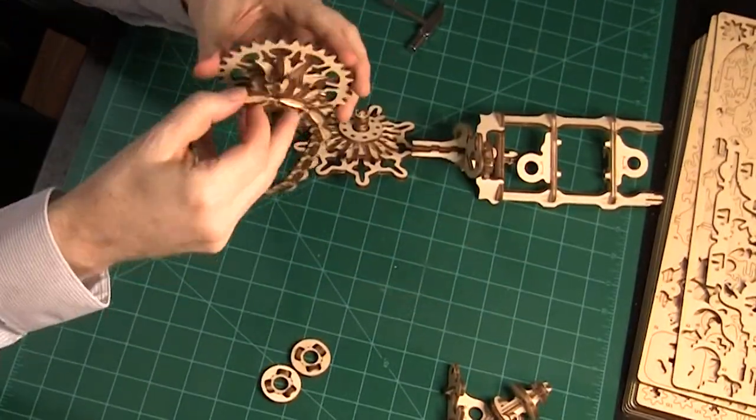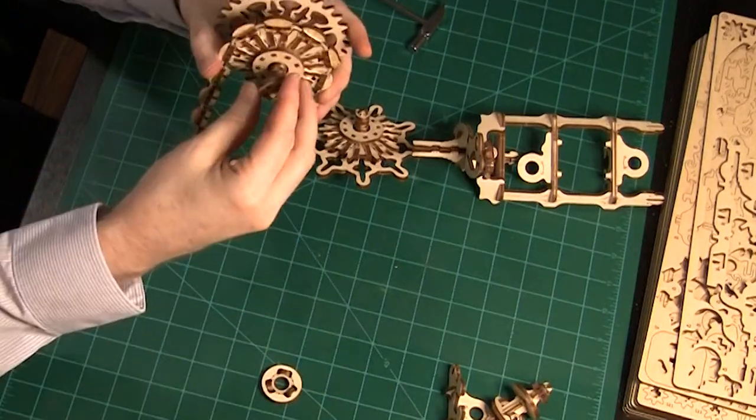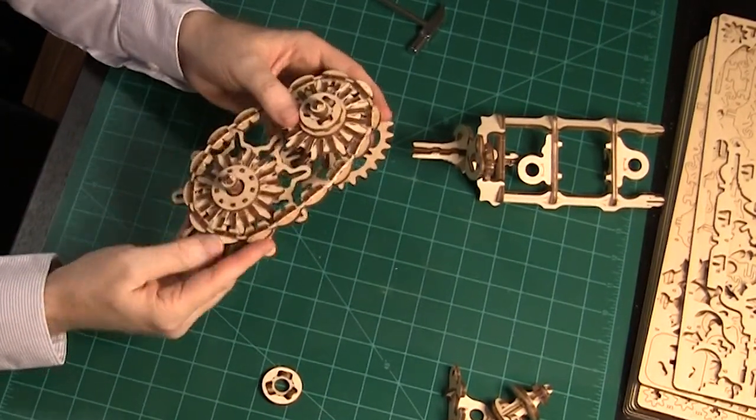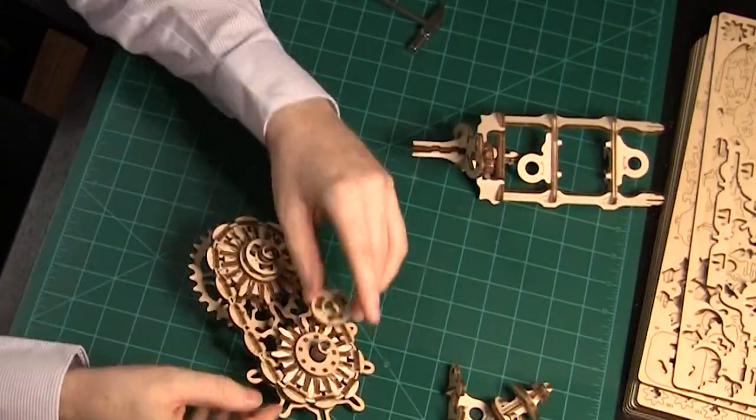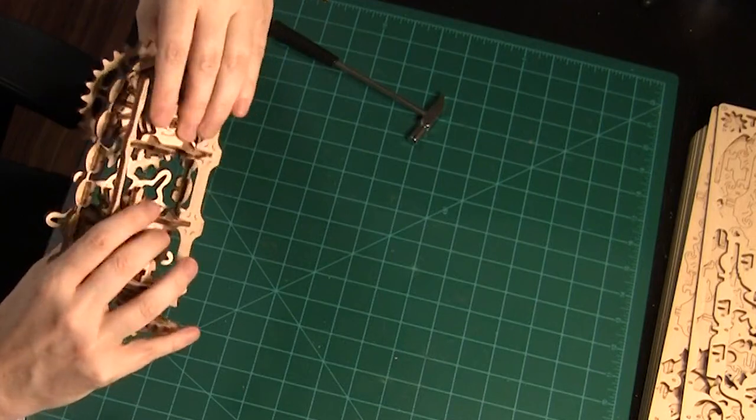Next, insert the two large gears into the chain. A small standoff piece is added to each gear. The whole assemblage is inserted into the two holes in the vertical assembly.